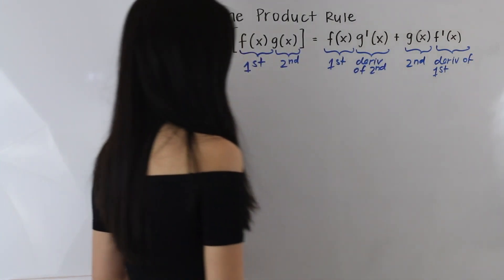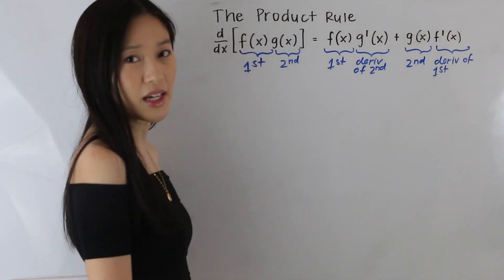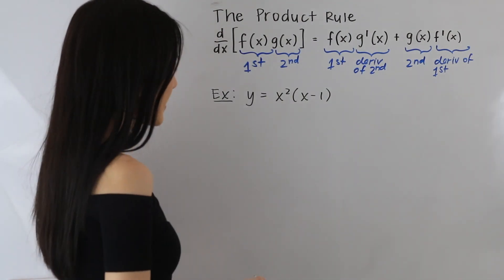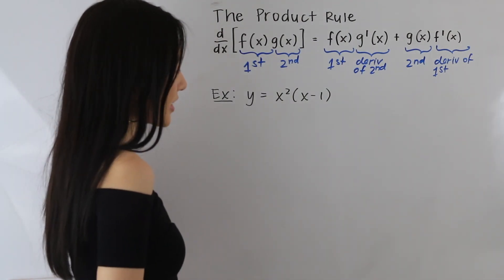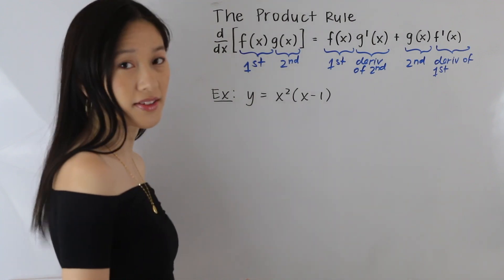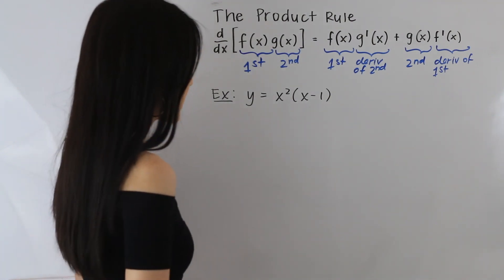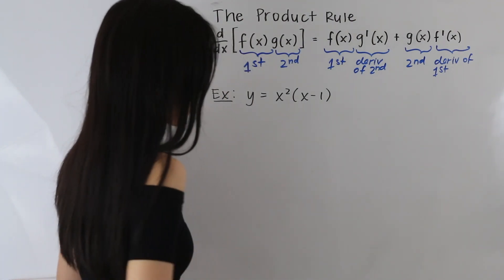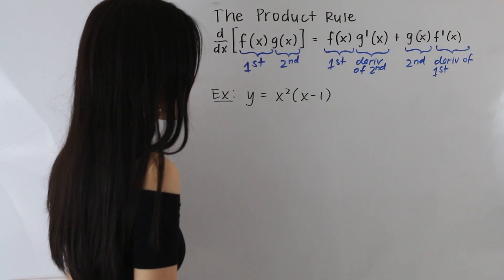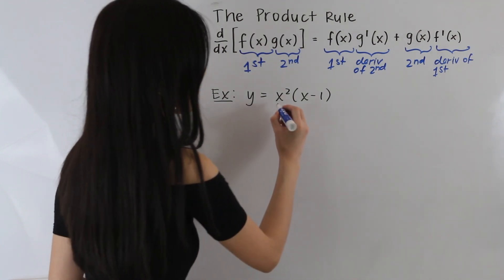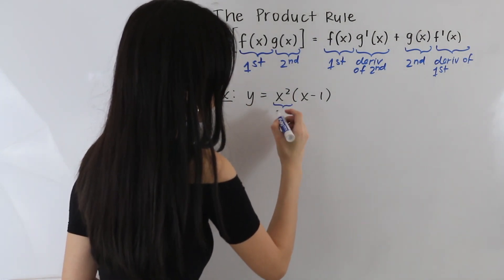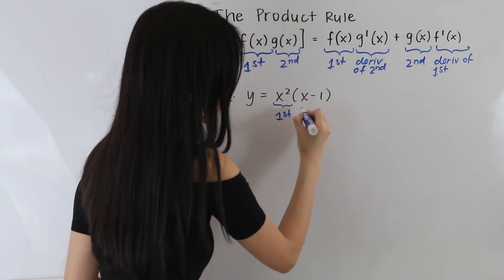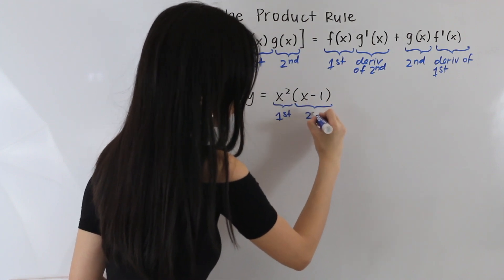Let's go ahead and apply this to some examples. In this first example, we have y is equal to x squared times x minus 1. We want to take its derivative, so the first thing I like to do is label our functions. This is our first function, and this is our second function.